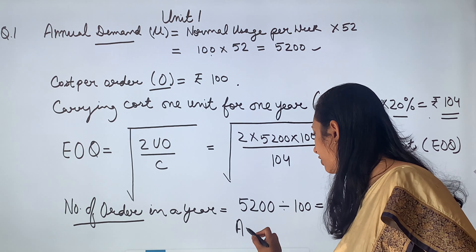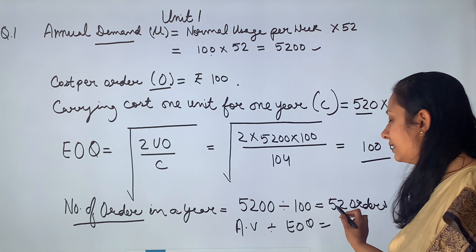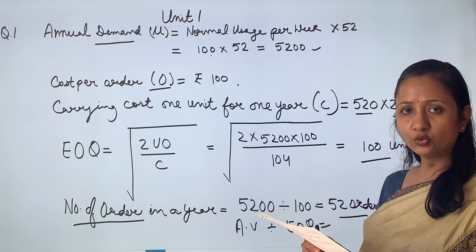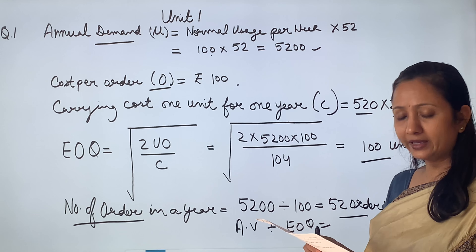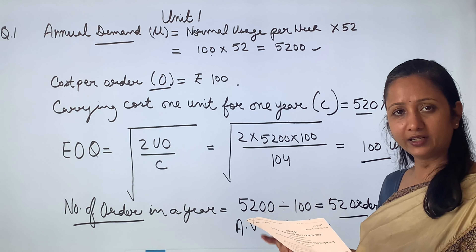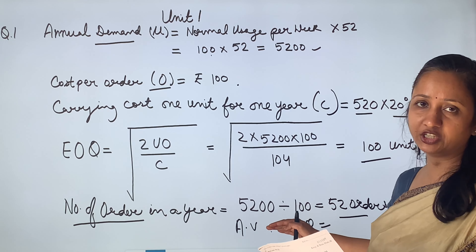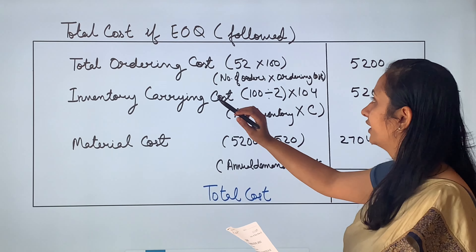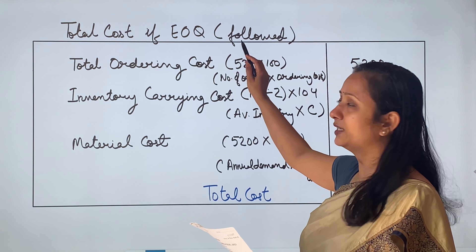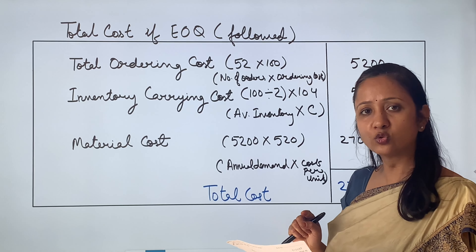Number of orders = annual uses ÷ EOQ. All units must be taken annually, not weekly. The normal usage is 100 tubes per week, so annual demand = 100 × 52 = 5,200 units. Number of orders = 5,200 ÷ 100 = 52 orders. First we follow EOQ, then we compare with the discount option. We will calculate total cost for both conditions.